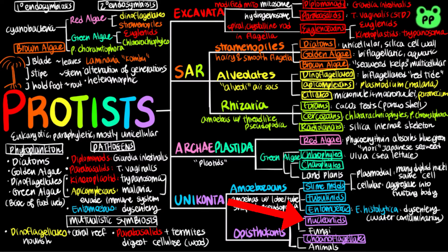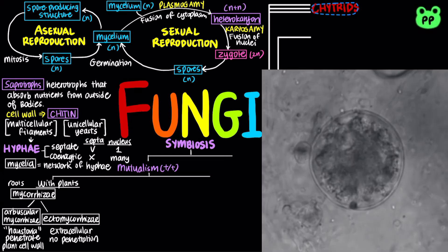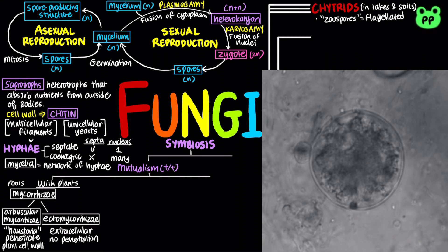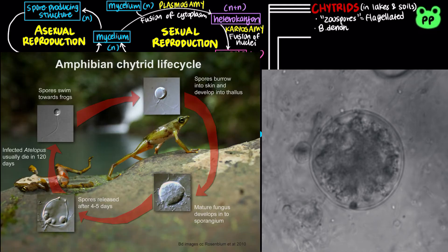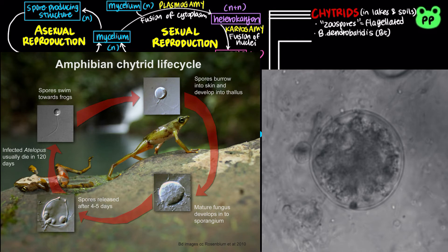Fungi are most closely related to unicellular protist nucleariids. An early group of fungi known as chytrids, found in lakes and soil, have flagellated spores known as zoospores that resemble nucleariids. One species of chytrids, known as Batrachochytrium dendrobatidis, is known to cause disease in amphibians.